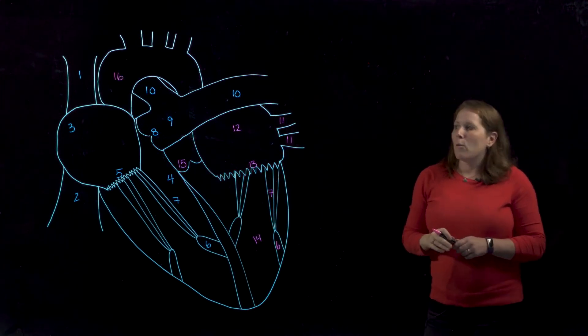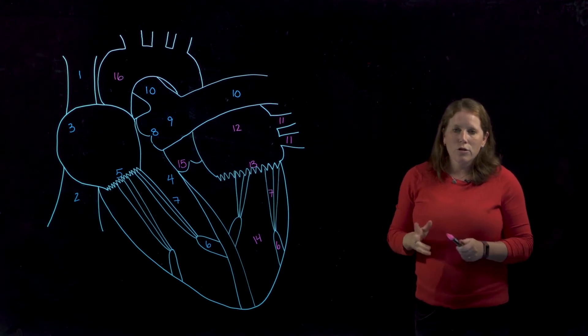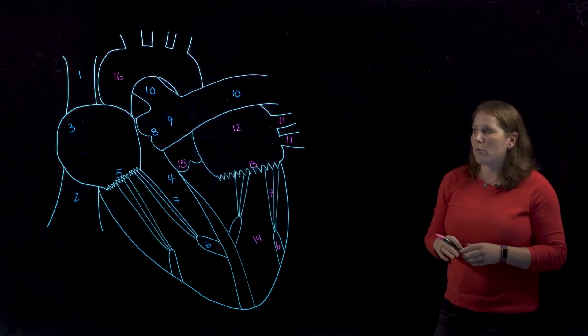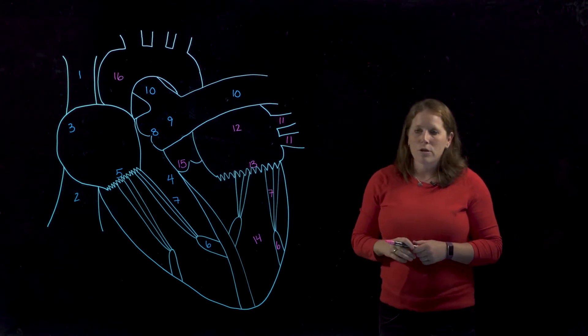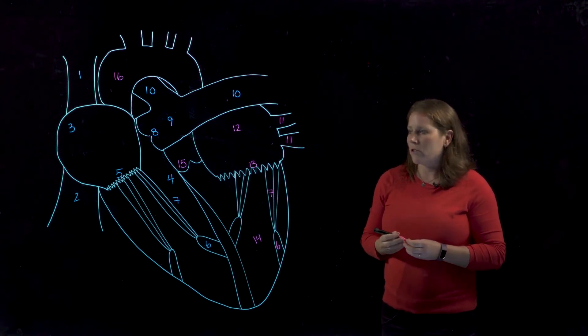If you're curious about where blood travels next, I have additional videos that trace the path of blood from the aorta up to the head, neck, and upper limb and also down to the abdomen and lower extremities.